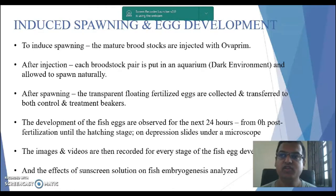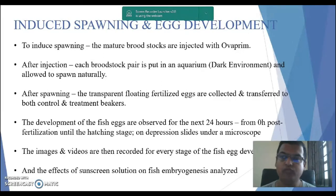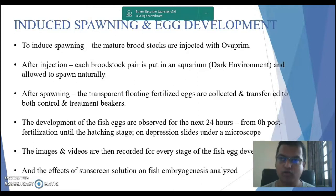The mature broodstock were injected with Ovaprim, a hormone that induces spawning in freshwater fish. After injection, each broodstock pair was put back in an aquarium in a dark environment and allowed to spawn naturally. After spawning, the transparent fertilized eggs, which were floating, were collected and transferred to both the treatment and control beakers.